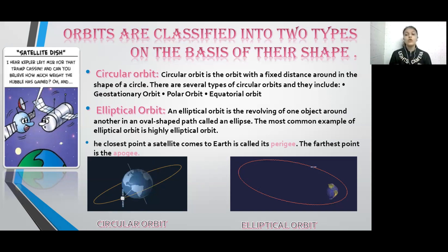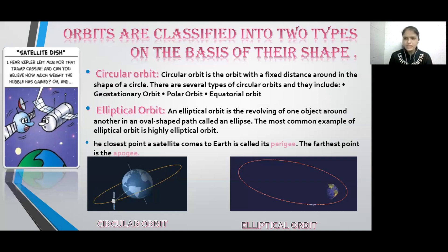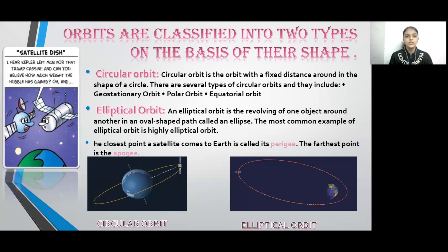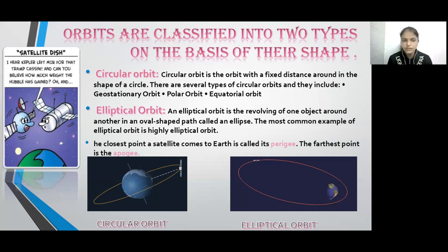Elliptical orbits create an ellipse-shaped path. The closest point when the satellite comes near the Earth is called the perigee, and the farthest point when the satellite moves away is called the apogee. So far we have discussed the types of orbits in which satellites rotate. Now let's move on to the next slide.